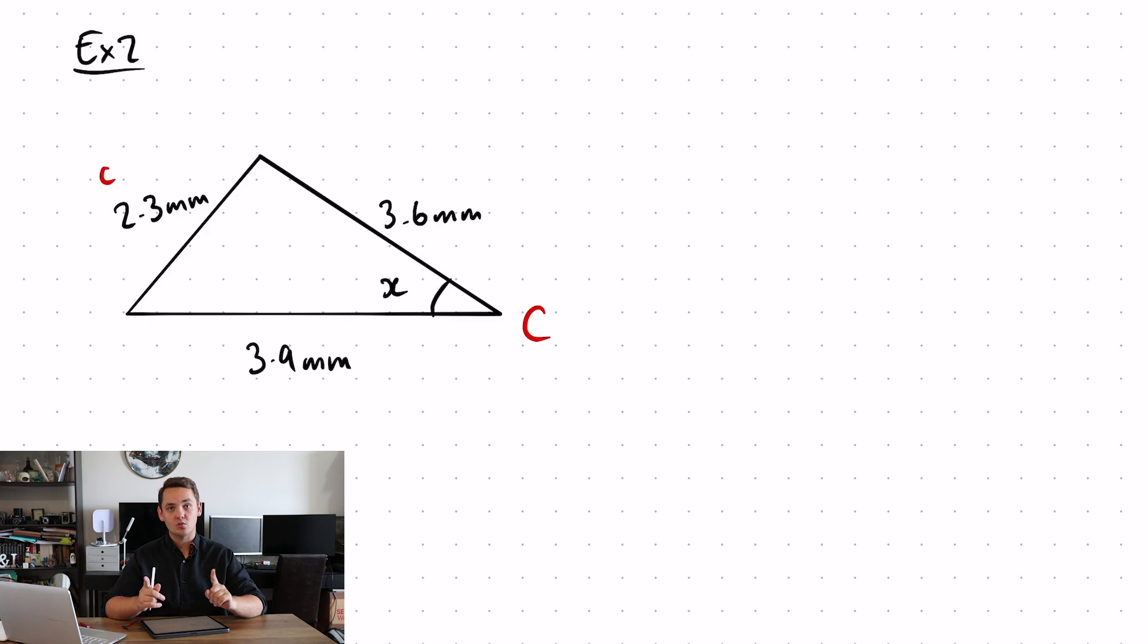Those are the only two important pieces of information because A and B can go around either way, but C and lower case C have to be in the right space. So, let me call this A and B.